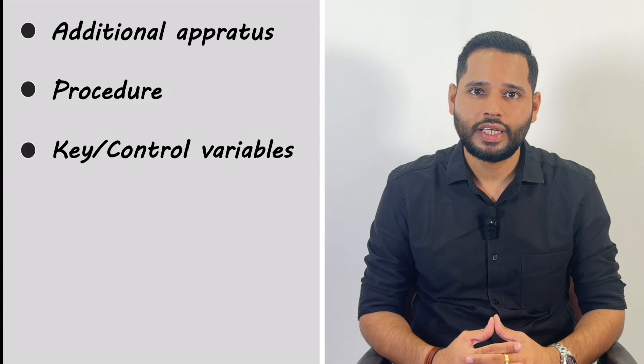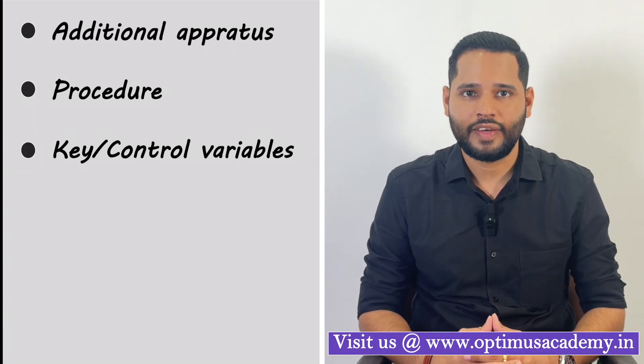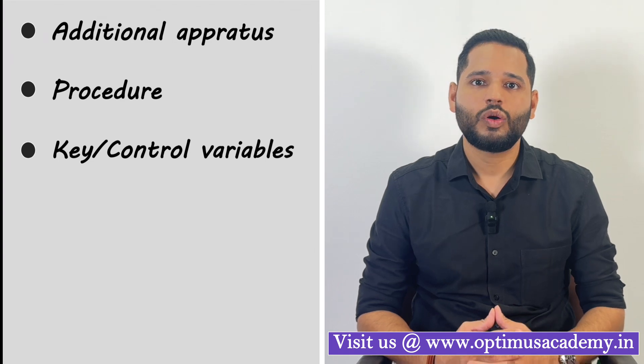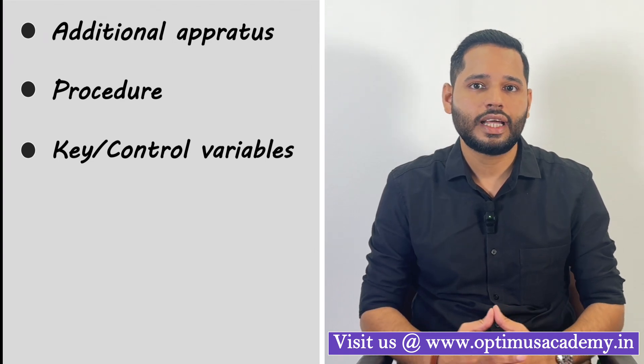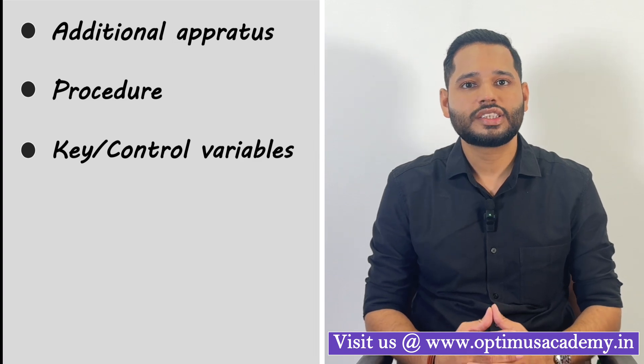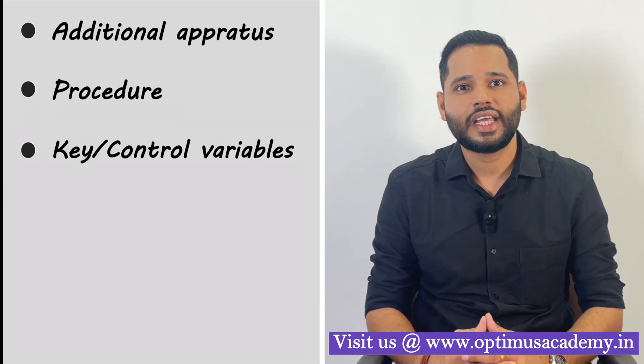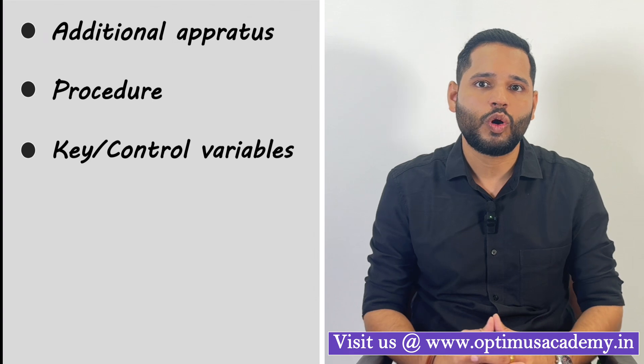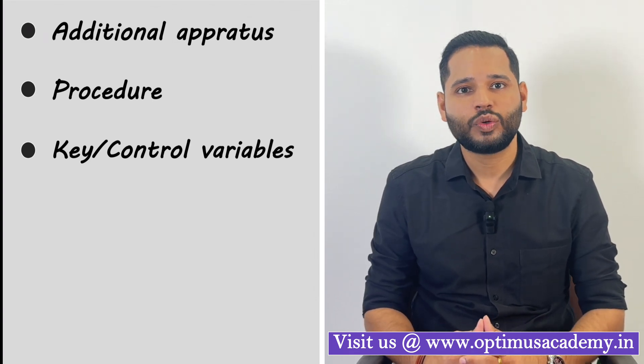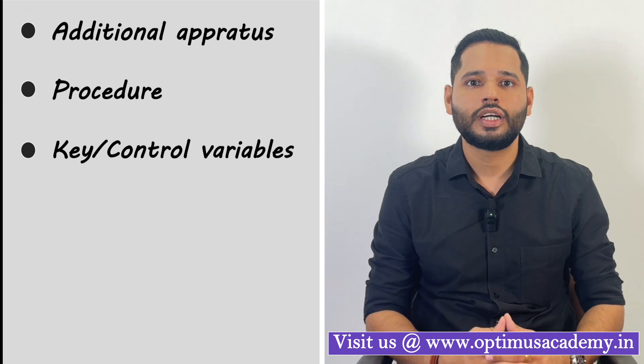The next pointer should be key variables or control variables. Note that whenever we write experiment, we will always check effect of one single factor on the experiment. So we have to just change one factor and check its effect, and we have to keep all other factors constant. So the factors that we have to keep constant, they go in control variable.